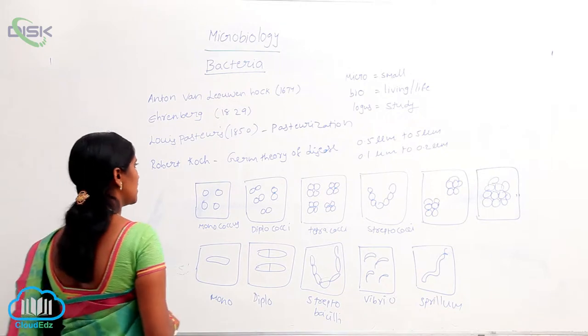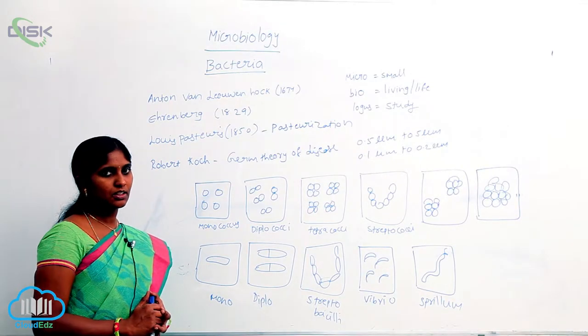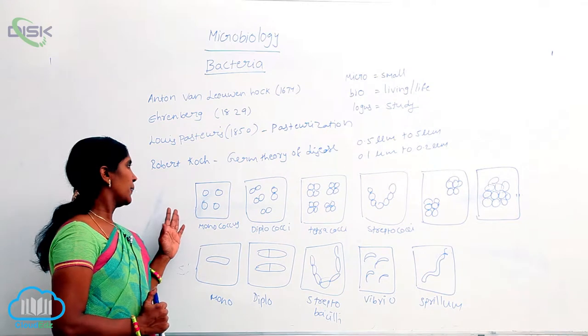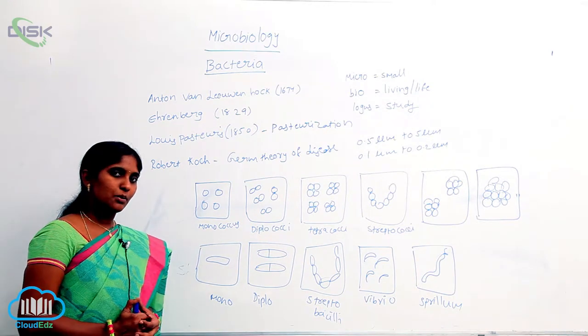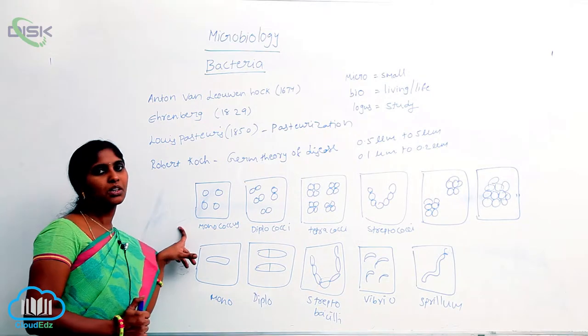When we come to the shape of bacteria, they exist in different forms. Bacteria that are spherical or round in shape are called coccus.